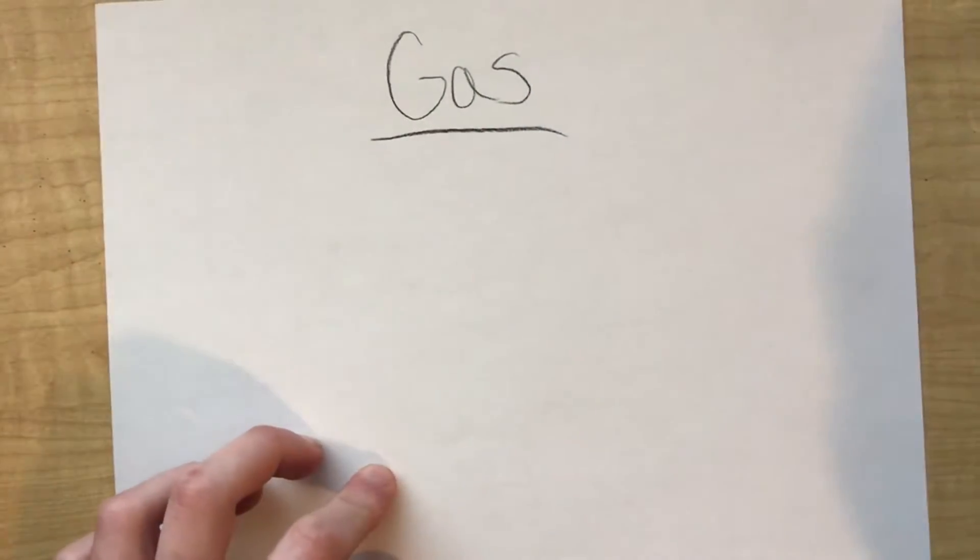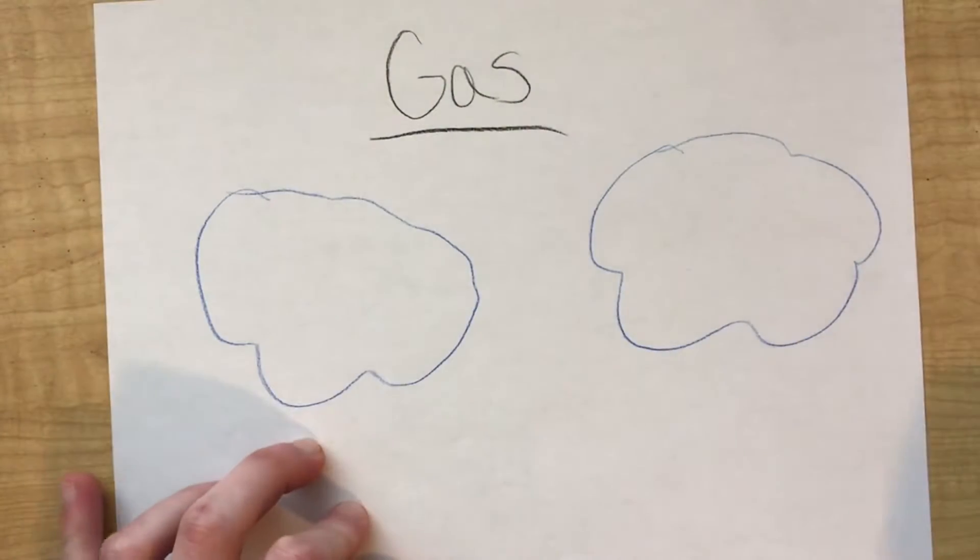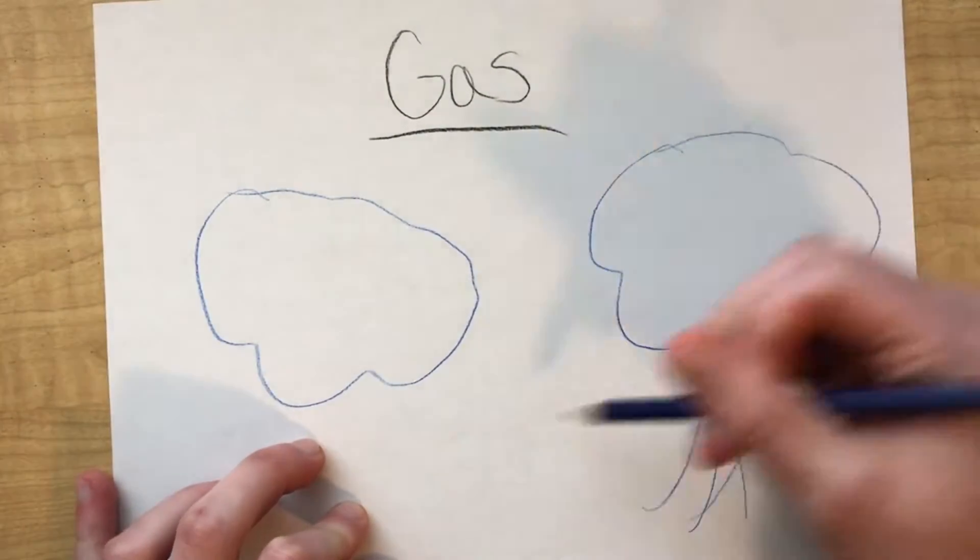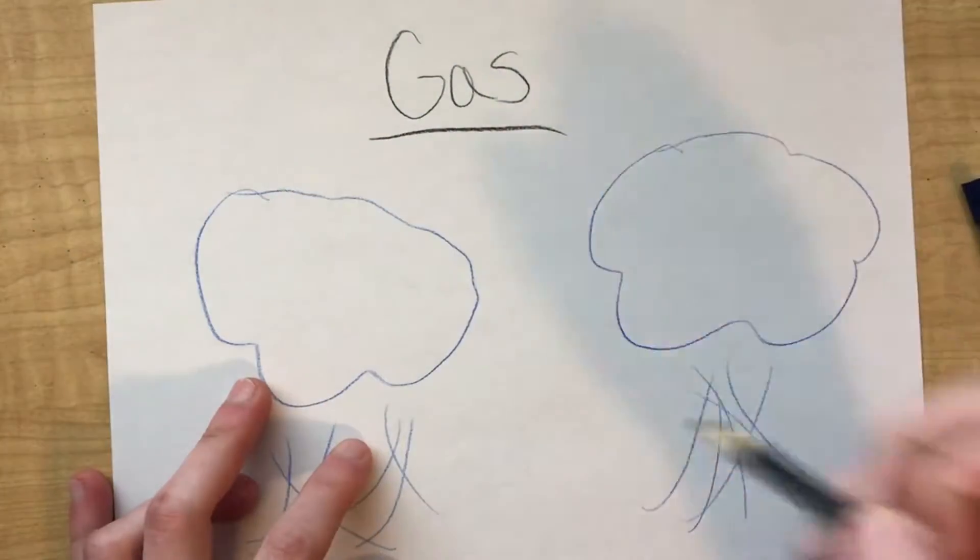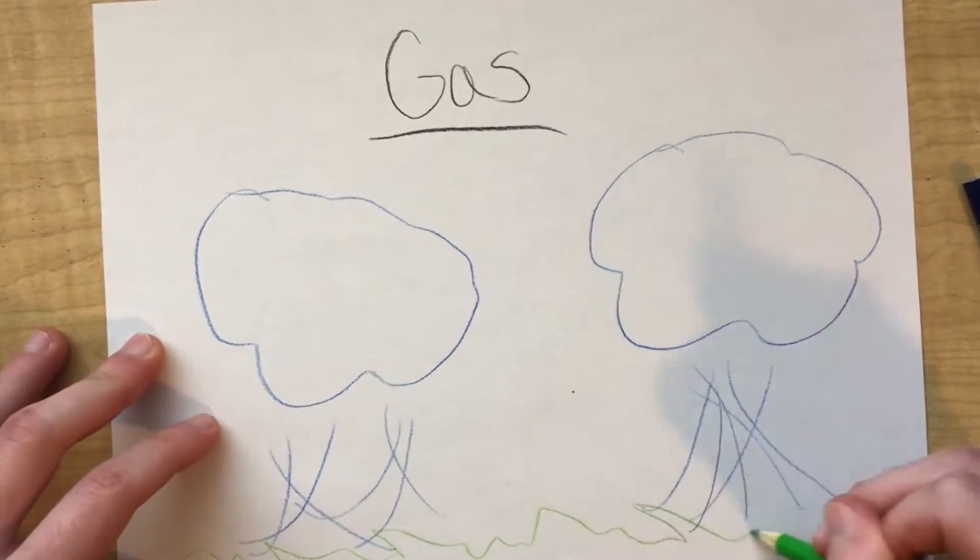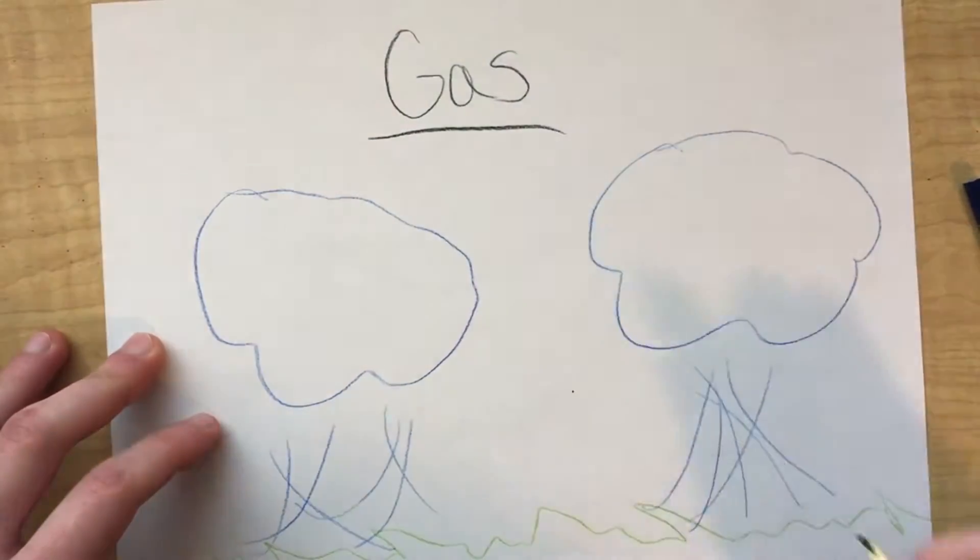The last form of water is water as a gas, and this is called water vapor. The cool thing about water vapor is it's always around us, but we just can't see it. In order for water to turn into a gaseous form, it must have a temperature of 212 degrees Fahrenheit.